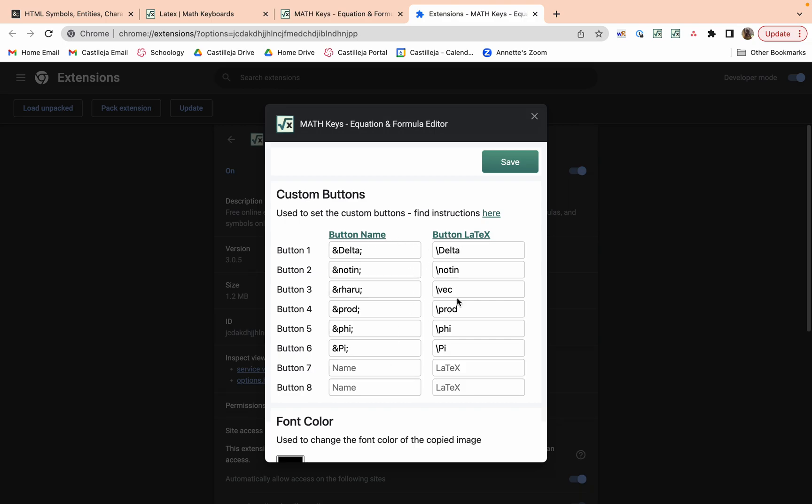There are two sections for making buttons. The first one is button name and the second one is button LaTeX. Button name is basically what will show up on your extension, so if you want like products, you can write prod and now prod will show up.